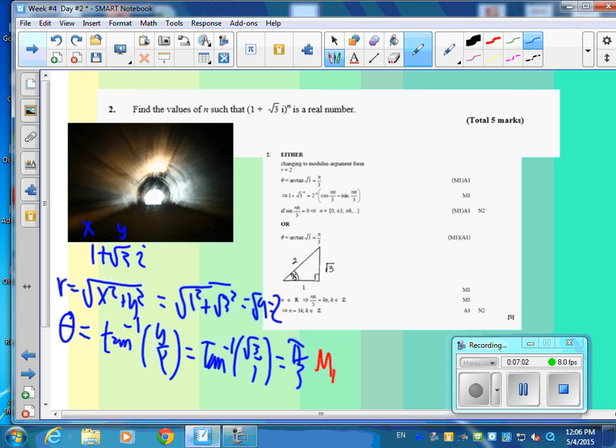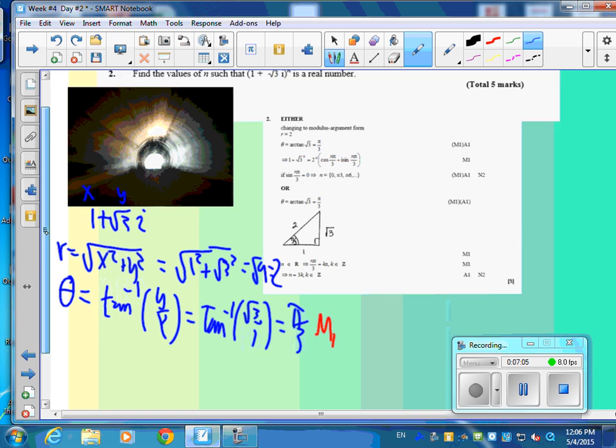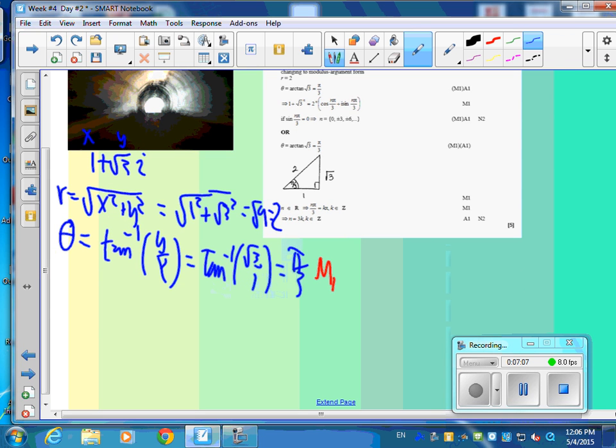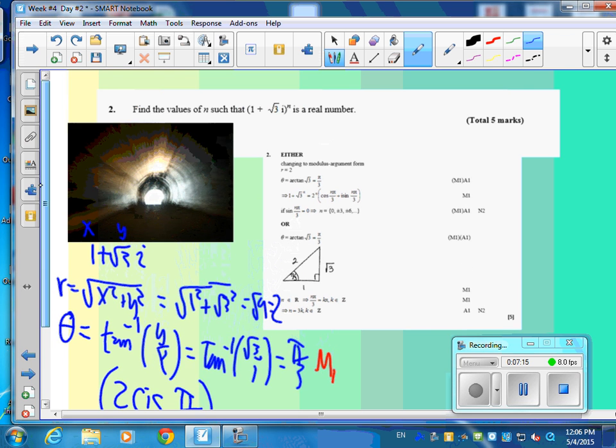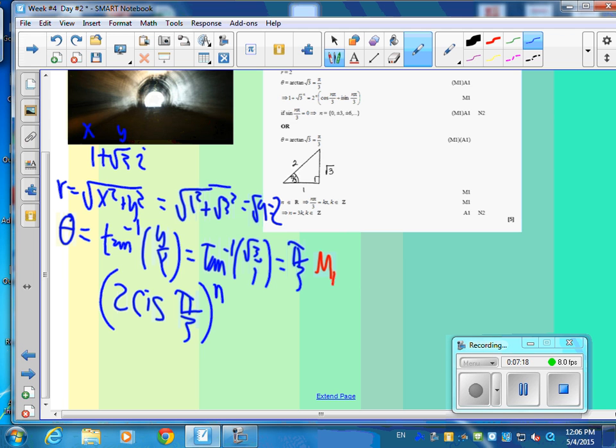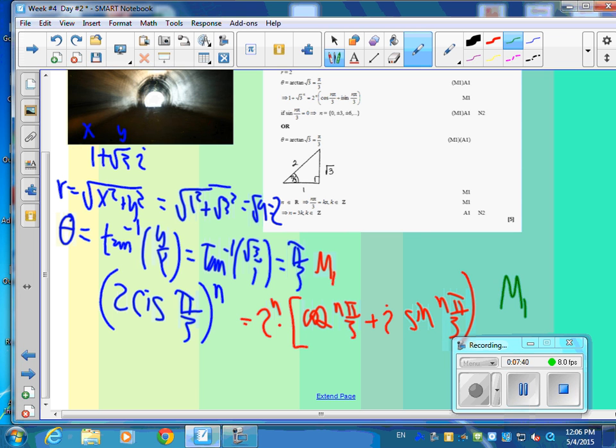Inverse tangent of y over x is the angle theta. And it's in quadrant 1, so we can just go inverse tangent of root 3 over 1. And that's pi over 3. That gave you one mark. And it's kind of an answer mark, method mark. Now we're going to change this into cis form. 2 cis pi over 3 to the n. DeMoivre's theorem says that this is equal to 2 to the n times the cosine of n pi over 3 plus i times the sine of n pi over 3. That is definitely a mark. Method mark.